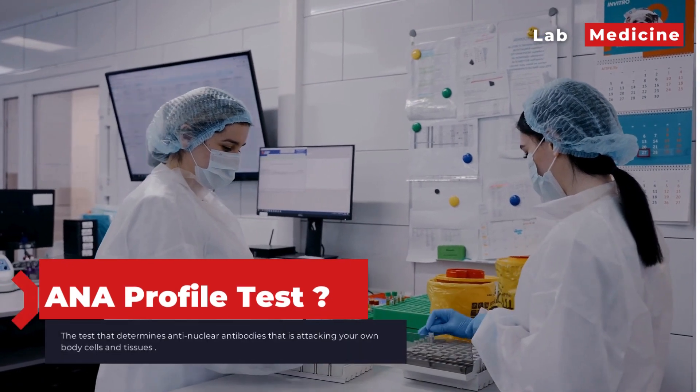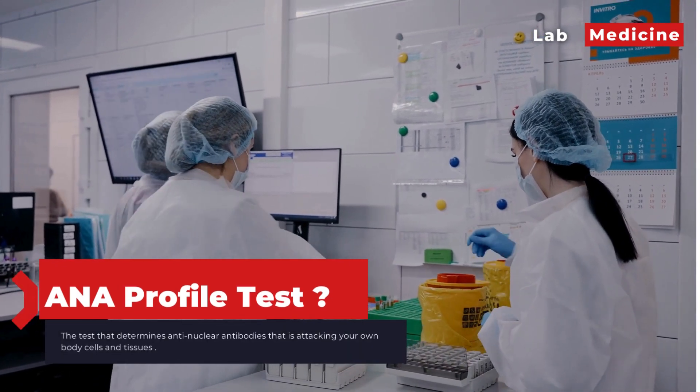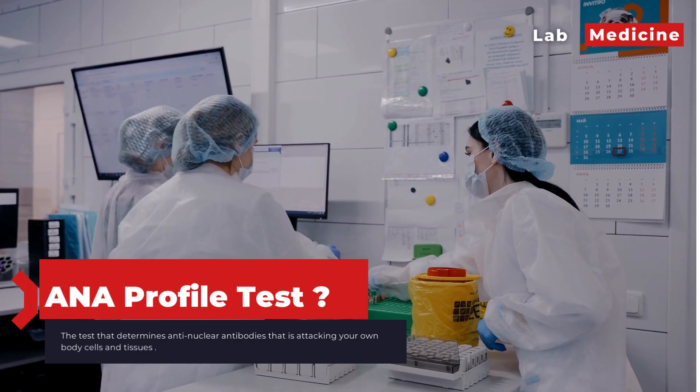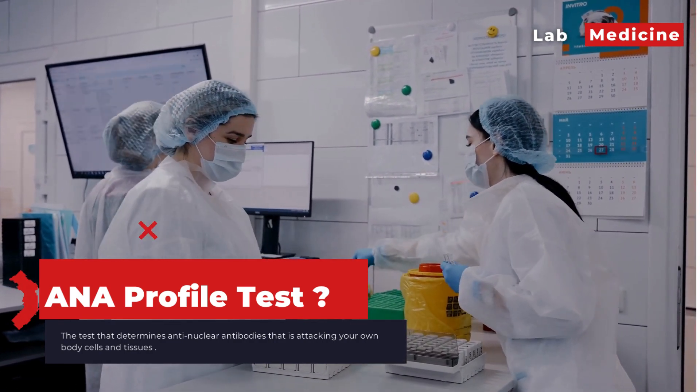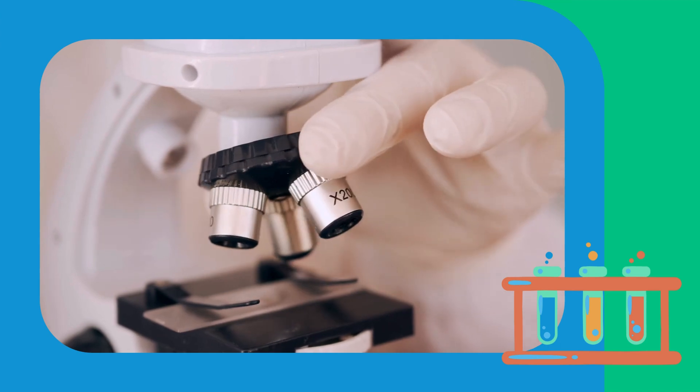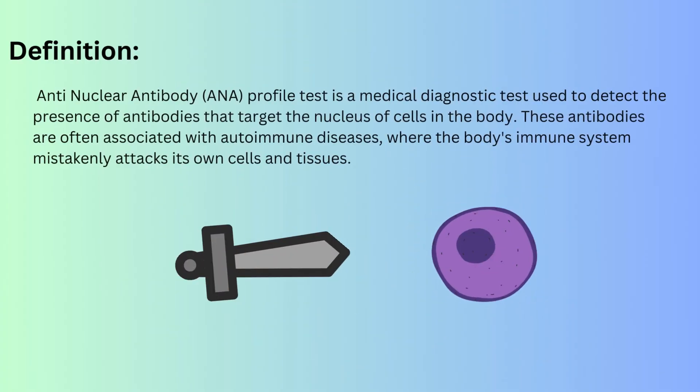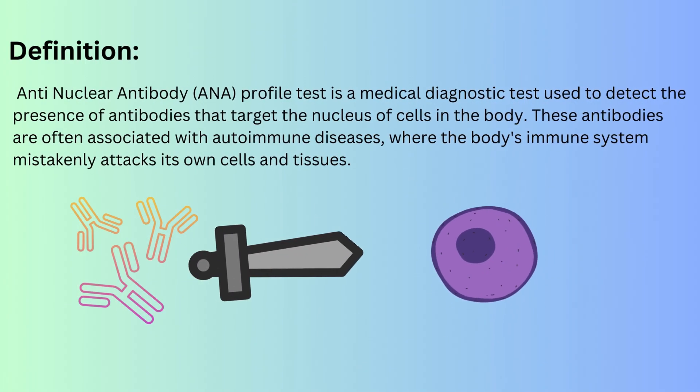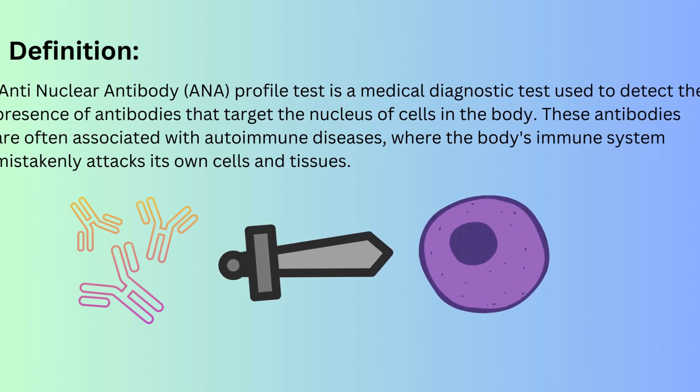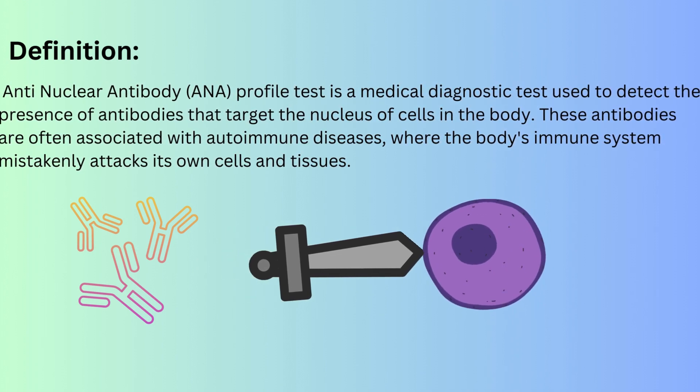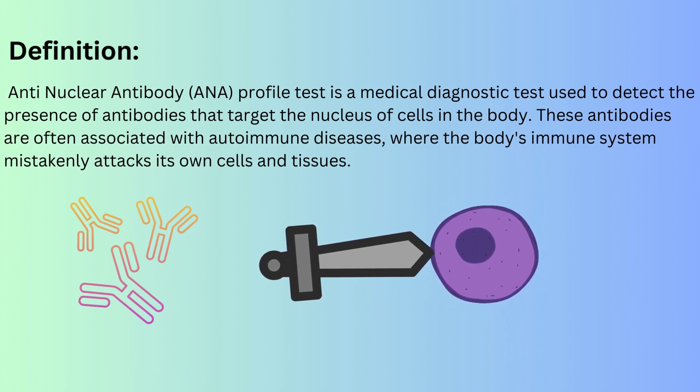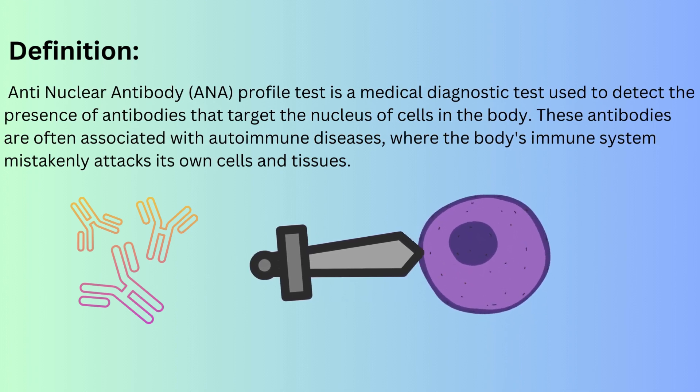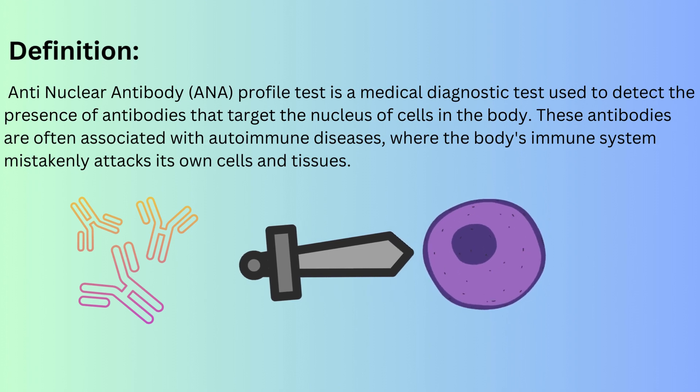Have you ever heard about ANA profile test? This is a special test which we perform in the lab for finding out the particular antibody that have been made or directed to your nuclear antigens of cells and tissues. Anti-nuclear antibody ANA profile test is a medical diagnostic test used to detect the presence of antibodies that target the nucleus of cells in the body. These antibodies are often associated with autoimmune diseases, where the body's immune system mistakenly attacks its own cells and tissues.